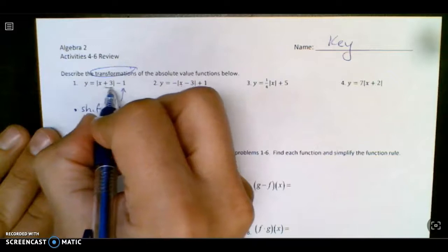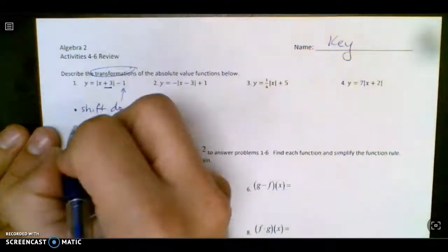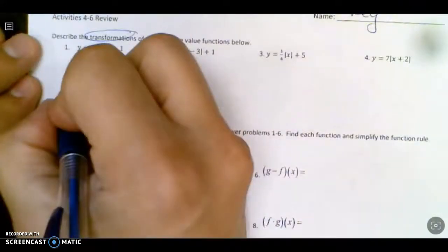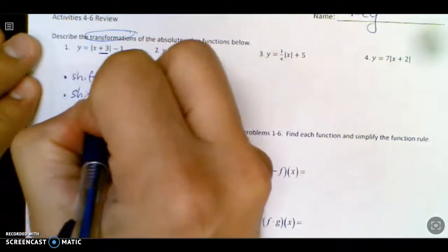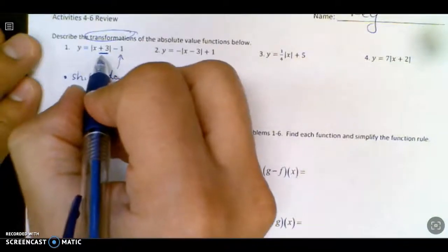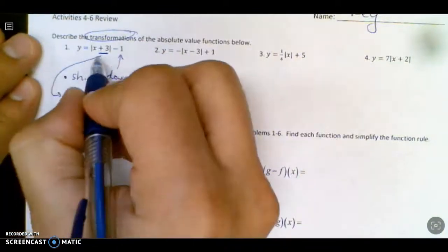This 3 right here, in with the x, is a left to right shift, and since it's in the absolute value signs, it's lying to you like it always does. It's shift left 3, even though it looks like a right 3, but that tells you to shift left 3.